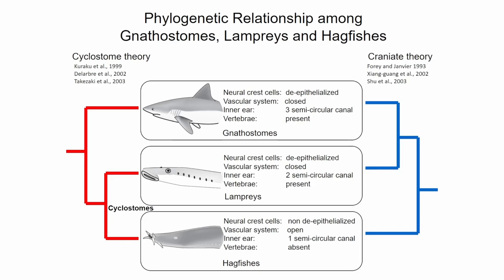In the classic textbook, vertebrates include all living craniates except Myxiniformes — the hagfish. This is exceptional based on classic textbooks. People simply say this phylogenetic tree is something strange, and I agree. But the problem is: based on this tree, how do you explain the apparently ancestral features of hagfish? That is quite an important point.